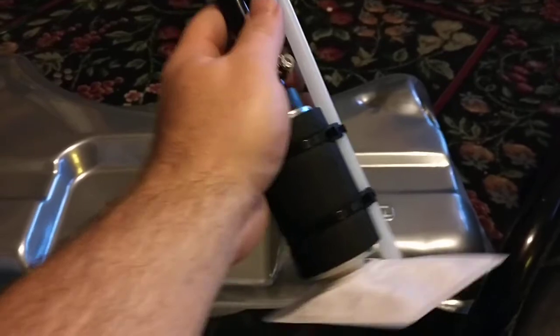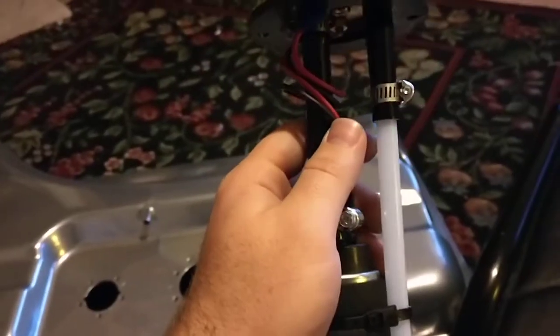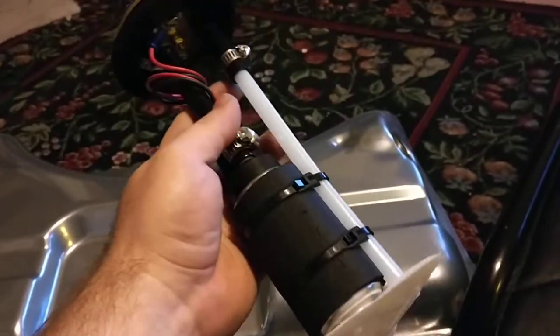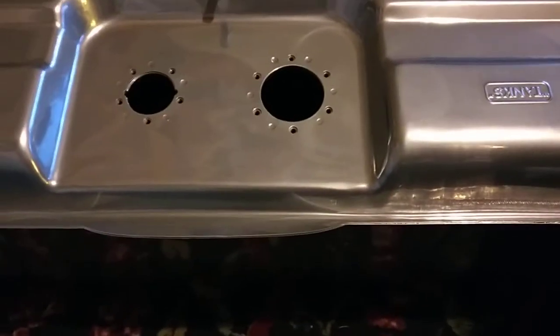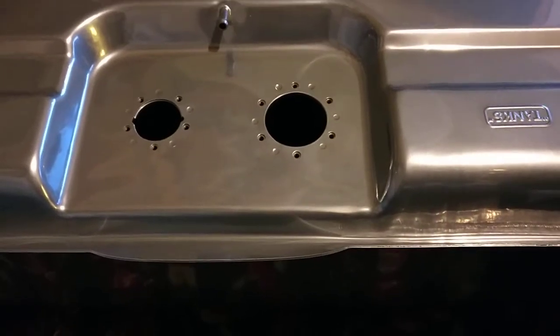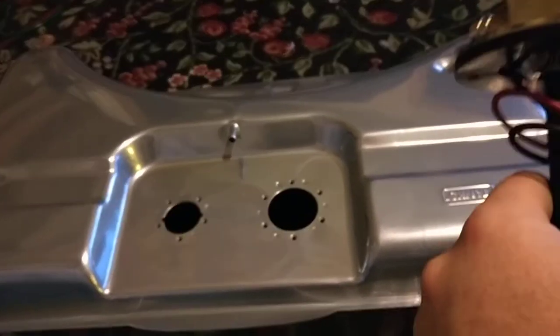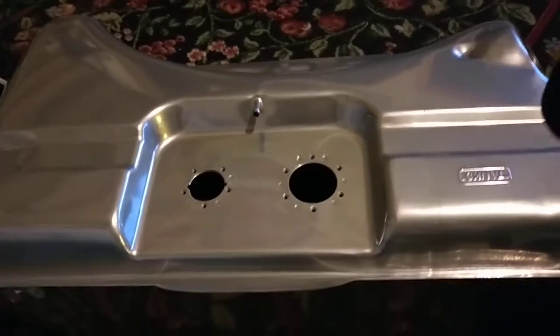So what you do is you get this out of all the packaging, you have two long tubes, you gotta cut it to length. And you gotta measure the depth of your tank. And this one is 8 inches for an early 8-body Mopar, that's going in a 65 Barracuda.